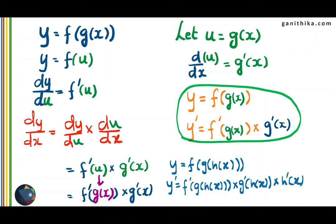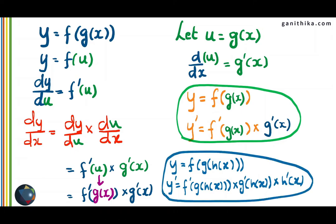When you are finding the derivatives of each of the functions, the functions which are inside would remain as it is. For example, when you are differentiating f, the function becomes f dash, but instead of f dash of x you will have f dash of g of h of x, which remains the same as in the original function. When you are differentiating g of h of x, you differentiate g to g dash, keep the h of x function as it is, and then go on to the innermost function h of x — the derivative of h of x is h dash of x. This is chain rule.